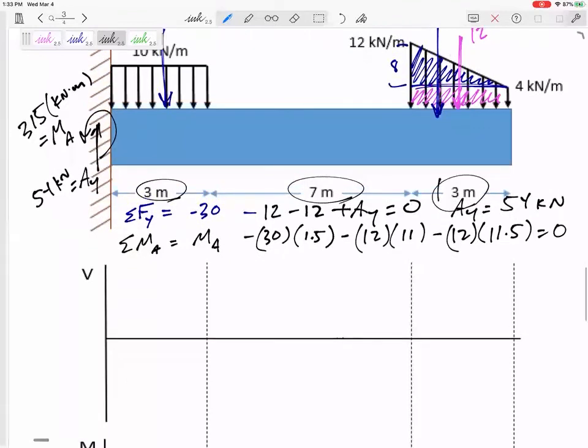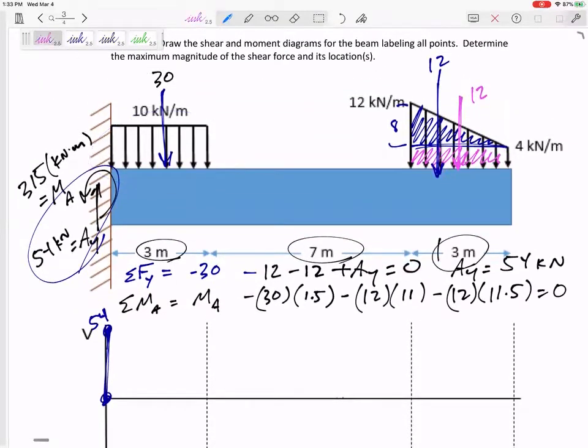Alright, so what would our shear diagram look like? Well, I'll start at zero, and then what's the first thing that I immediately encounter is 54 up. So I would go up to 54 and label that point for me, 54. Then I start walking along, and what do I feel? I feel this distributed load. Now, we replaced the distributed load with that 30 right at the middle, but that was for the statics portion of it. We need to go back. It's a distributed load. It's not 30 immediately right there at the middle. It's a distributed 10 over 3. So it's getting pushed down little by little by little. That 30, that is how far it gets pushed down from 0 to 3. So it gets pushed down to, what, 24.